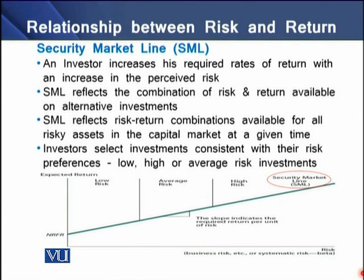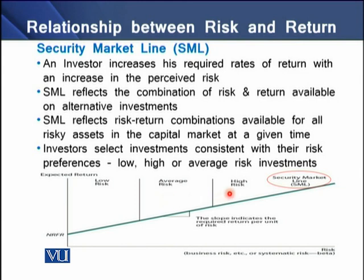On the screen we can see a graph that shows an SML. On the x-axis we have riskiness, which is basically the beta — representative of business risk, financial risk, or other systematic risks. On the y-axis we have the nominal risk-free rate, which is the risk-free rate available on a risk-free investment. As the level of riskiness increases, the level of return increases. Low risk, average risk, and higher risk are plotted along this line. The line that relates riskiness with the risk-free rate is known as the security market line, or SML.